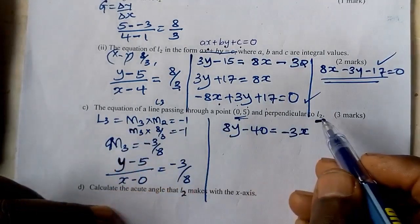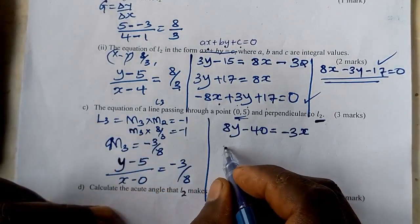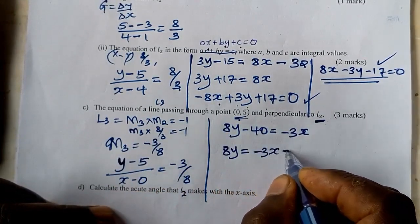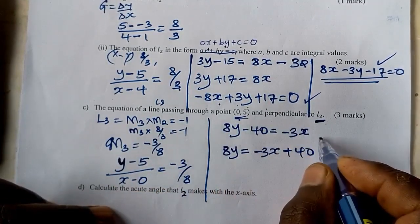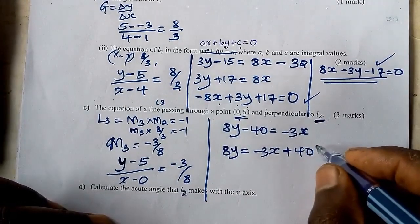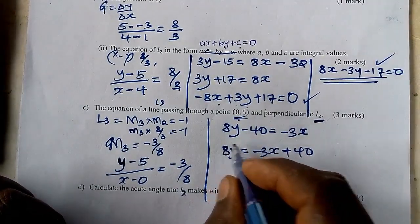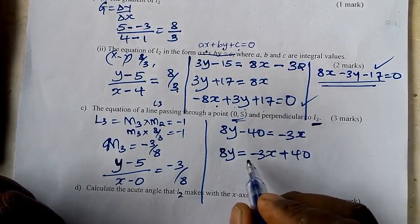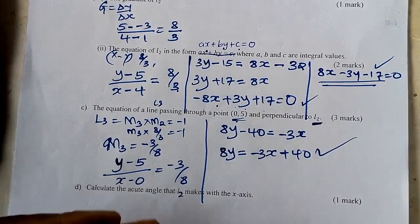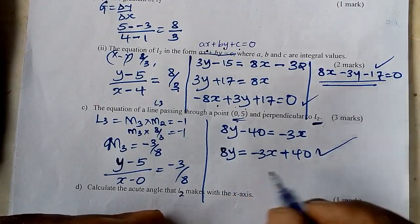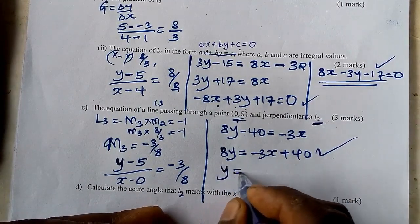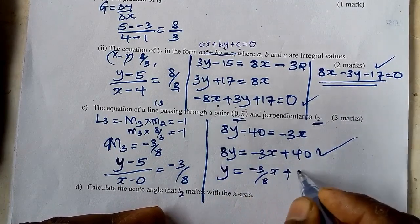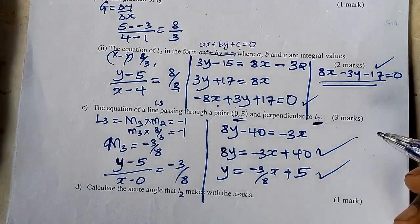The equation of L3 can be written as 8y equals negative 3x plus 40. You can also rearrange by dividing everything by 8, giving y equals negative three eighths x plus 5. Both forms are acceptable depending on the instructions given.